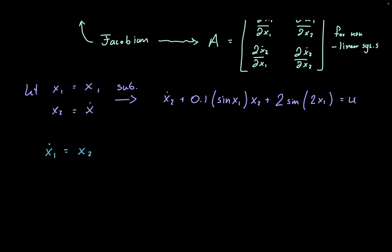For our second equation, that's going to be our x2 dot, we actually have this already written out. All we have to do is move all of these values off to one side and simply isolate our x2 dot. That'll leave us with negative 0.1 times sine of x1, x2, minus 2 times sine of 2x1 plus u.